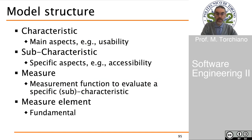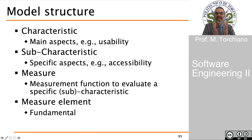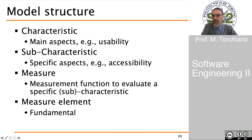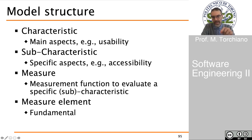When we talk about a product quality model, we focus on characteristics and sub-characteristics — the aspects we are addressing. These are essentially constructs that are quite general and somewhat abstract. The measures used to address specific characteristics and sub-characteristics are built from measure elements, which are basic measures used to compute the measures that in turn address the characteristics. These are the fundamental measures that can be collected addressing our entities.